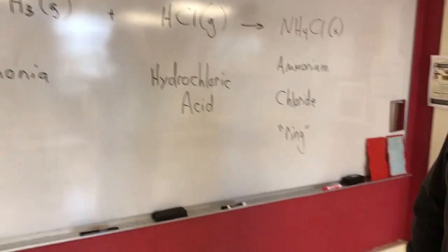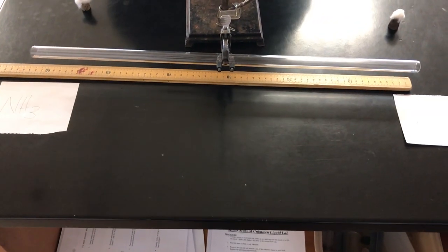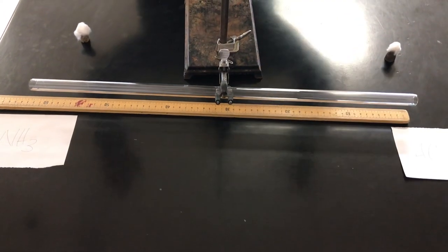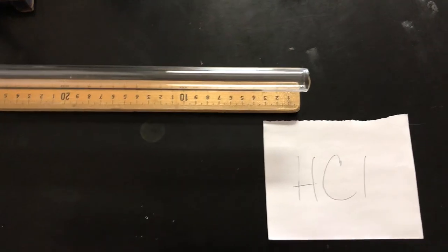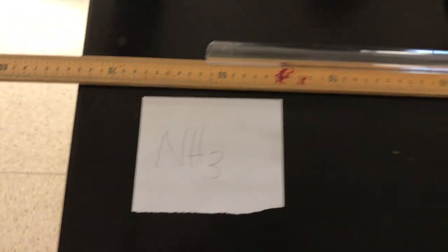And if they meet they react very easily to make ammonium chloride which is a solid. And so what will happen then is we're going to start the gases down opposite ends of this tube and wherever they meet we'll end up with a smoke ring that will mark their meeting point.